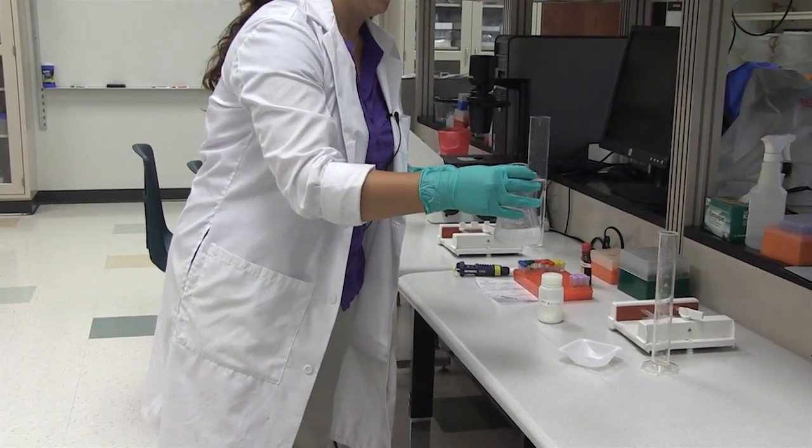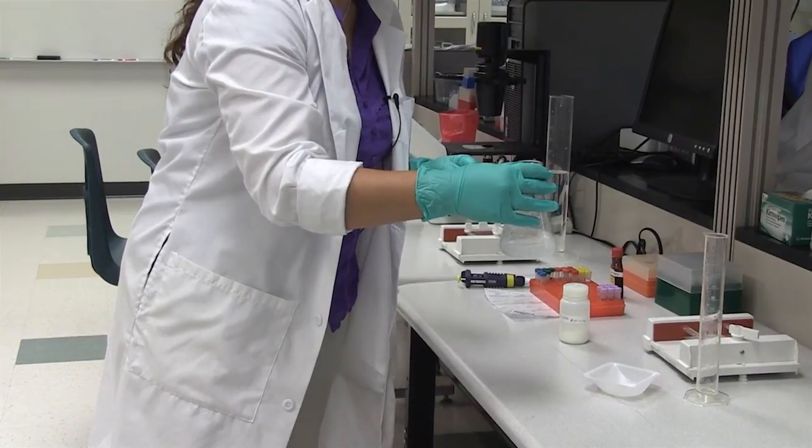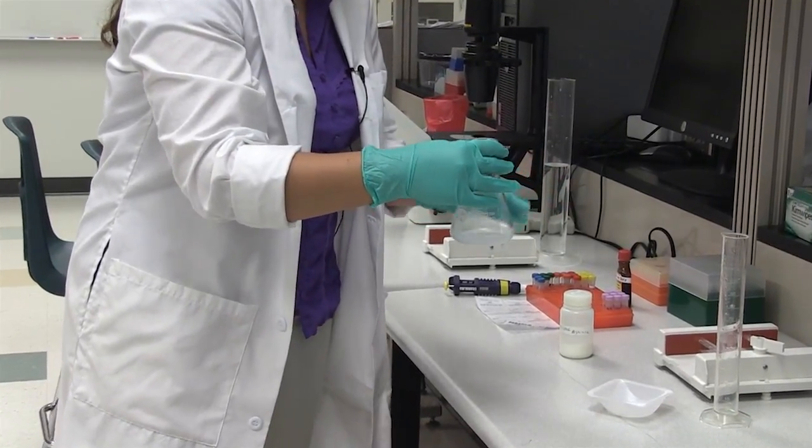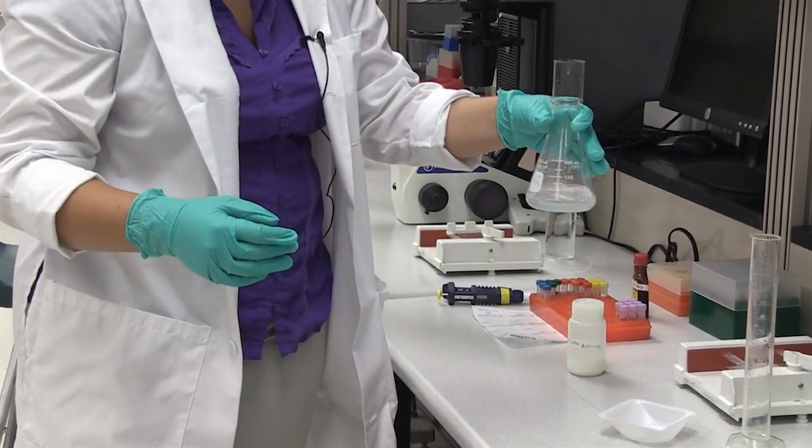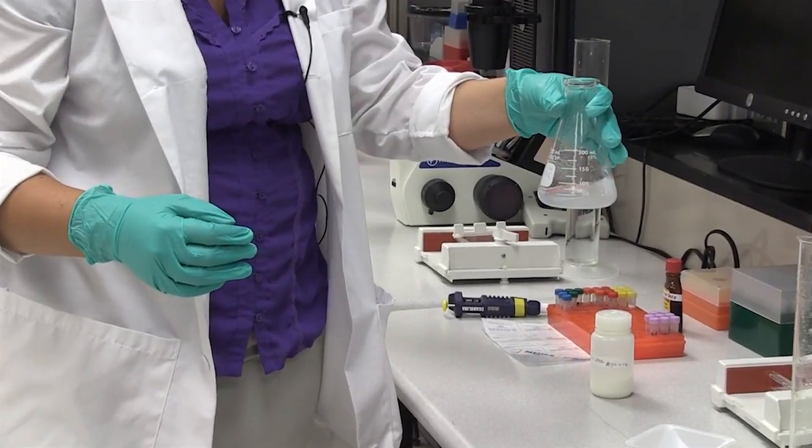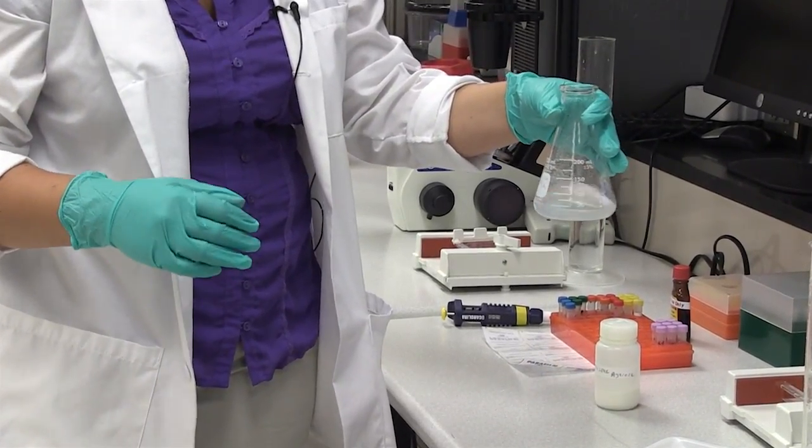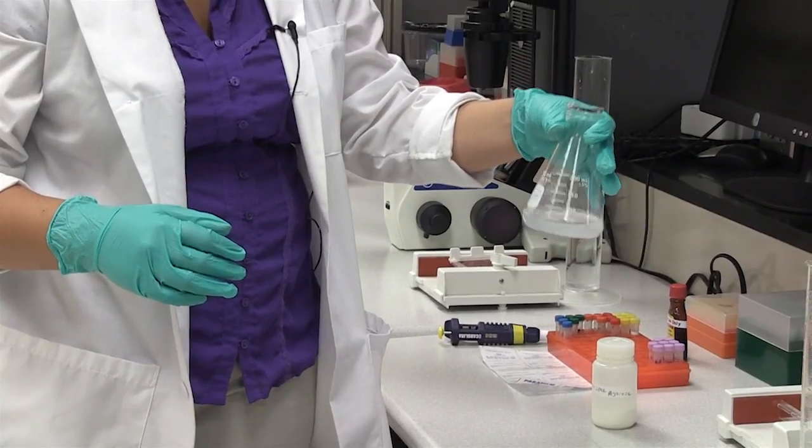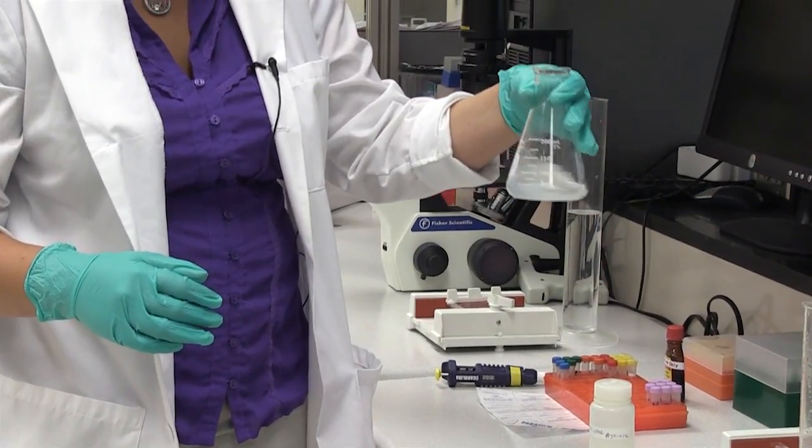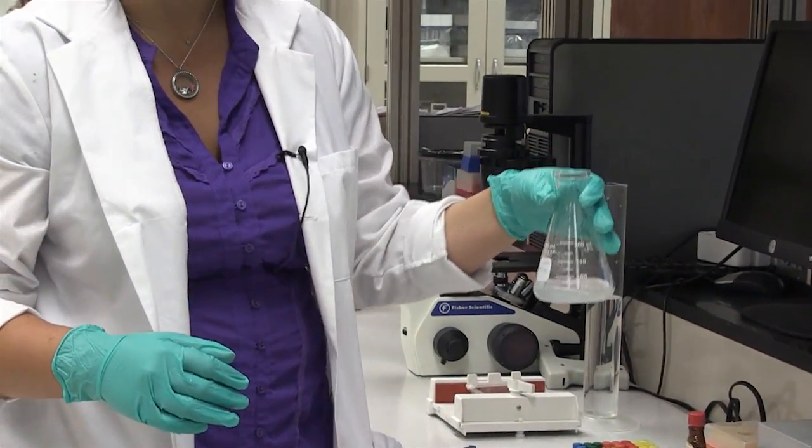Now that we have combined the agarose and the buffer we need to let it hydrate for about a minute at room temperature and then we're going to take it over to the microwave, add heat, swirl it twice during the minute time that it is being microwaved and we will have a nice clear agarose that's ready to pour.